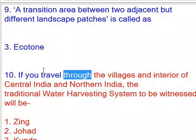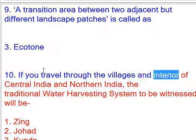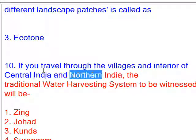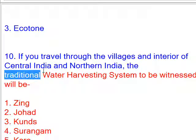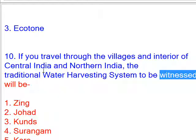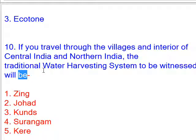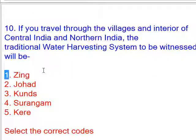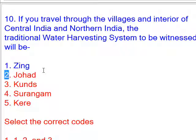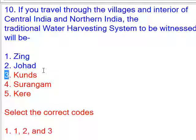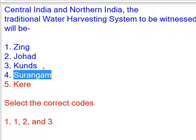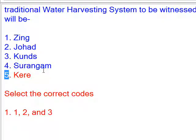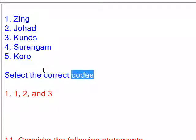If you travel through the villages and interior of central India and northern India, the traditional water harvesting system to be witnessed will be: 1. Zing, 2. Johad, 3. Quds, 4. Serangum, 5. Care. Select the correct codes.